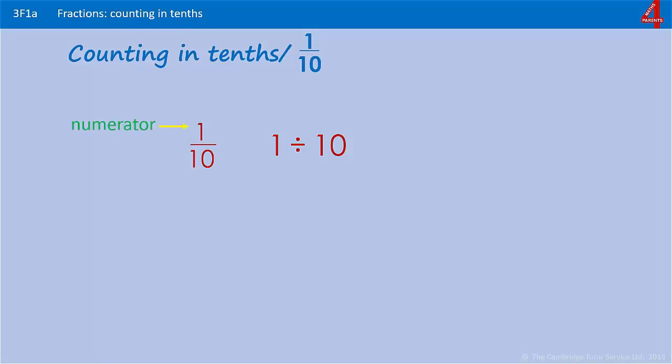All fractions have a numerator, which is the number on top of the line, and a denominator, which is the number below the line. The number above the line is how many you have, and the number below the line is what you've divided it by.